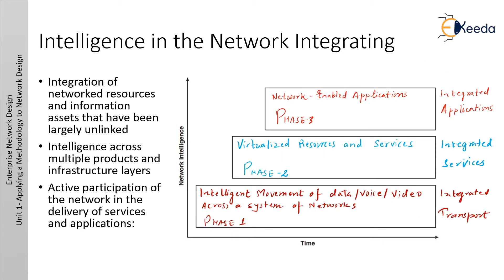Intelligence in the network: integrating intelligence into the network involves aligning network and business requirements. To accommodate today's and tomorrow's network requirements, the Cisco vision of the future includes the Intelligent Information Network (IIN) — a strategy that addresses how the network is integrated with businesses and business priorities. The first feature is integration of network resources and information assets. Modern converged networks with integrated voice, video, and data require that IT departments more closely link the IT infrastructure with the network.